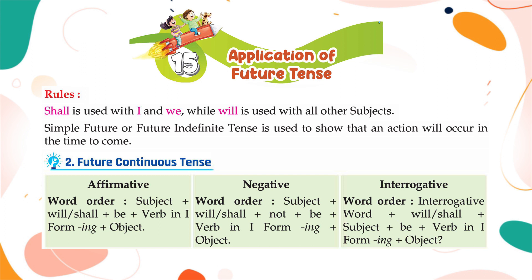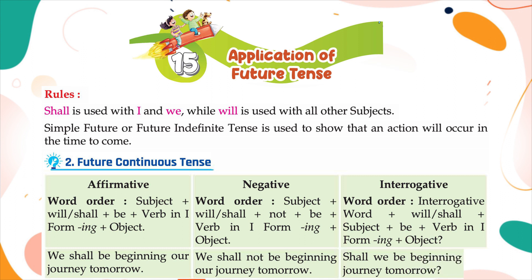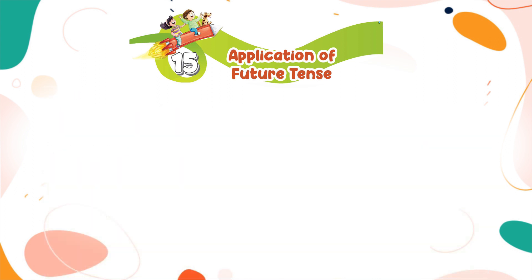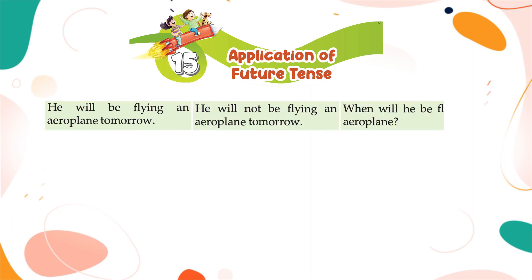Examples: We shall be beginning our journey tomorrow. We shall not be beginning our journey tomorrow. Shall we be beginning our journey tomorrow? He will be flying an aeroplane tomorrow. He will not be flying an aeroplane tomorrow.